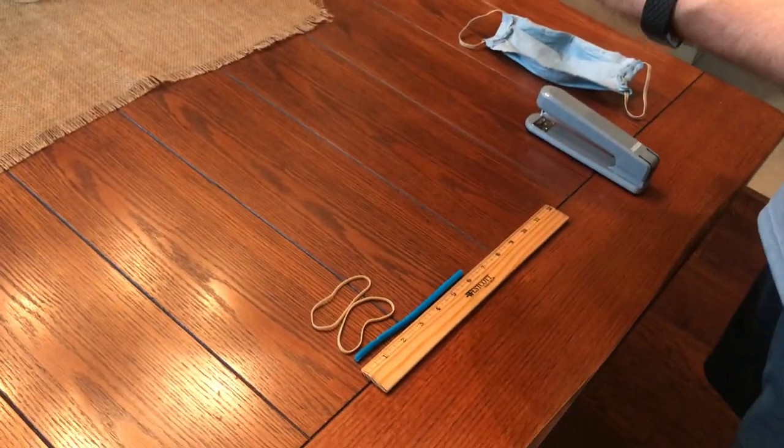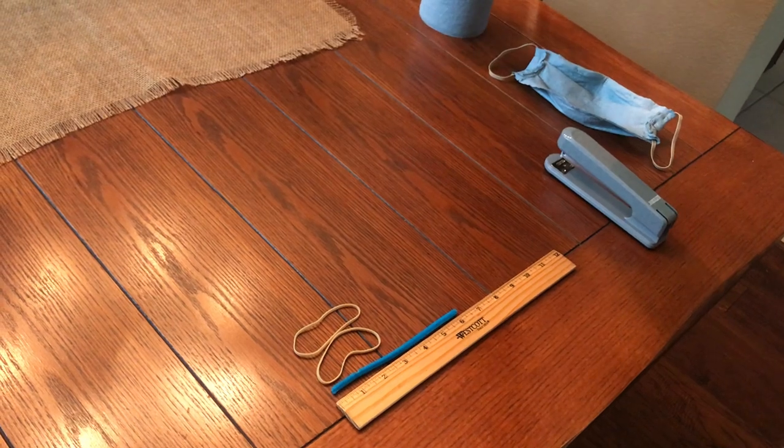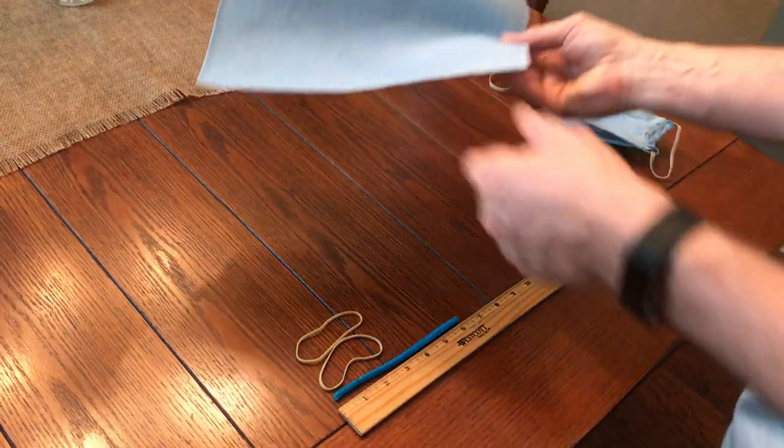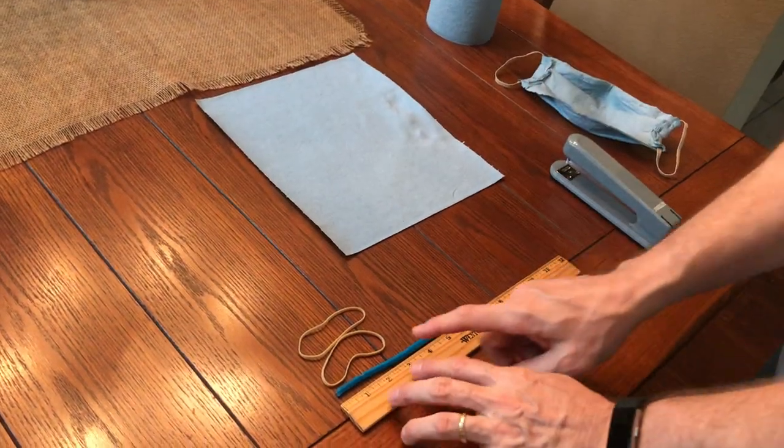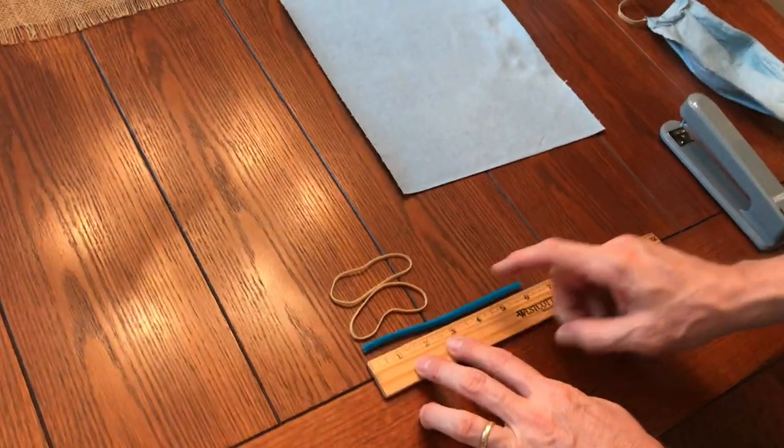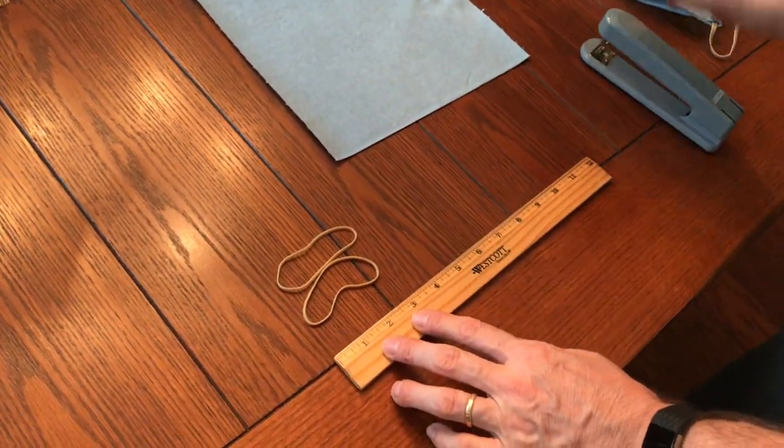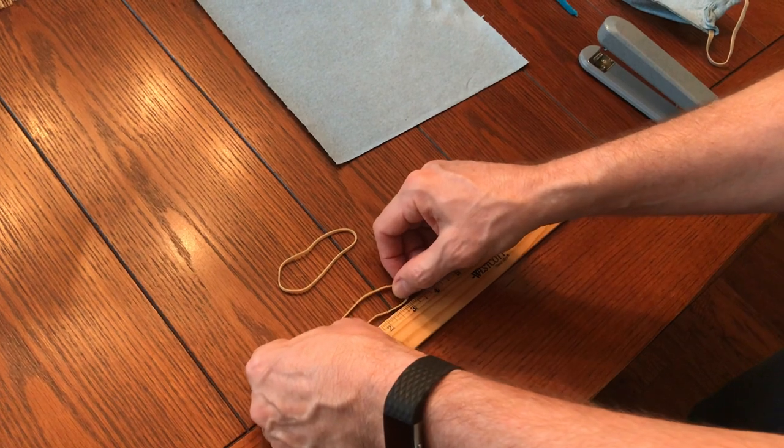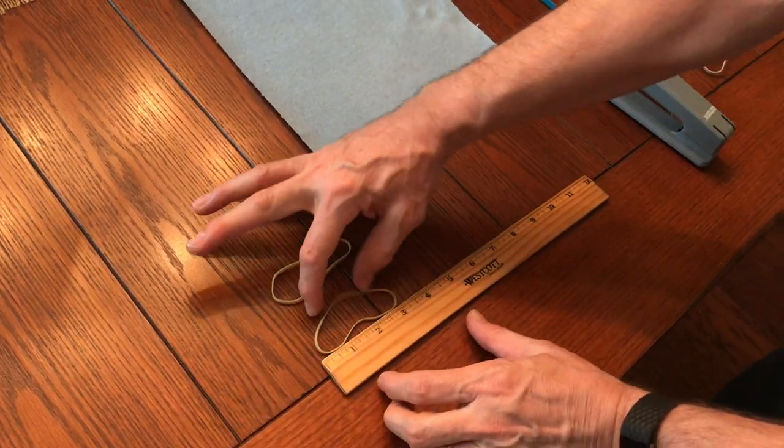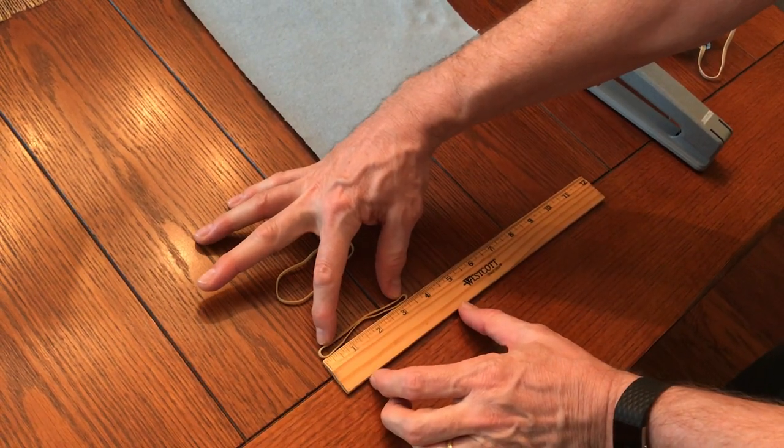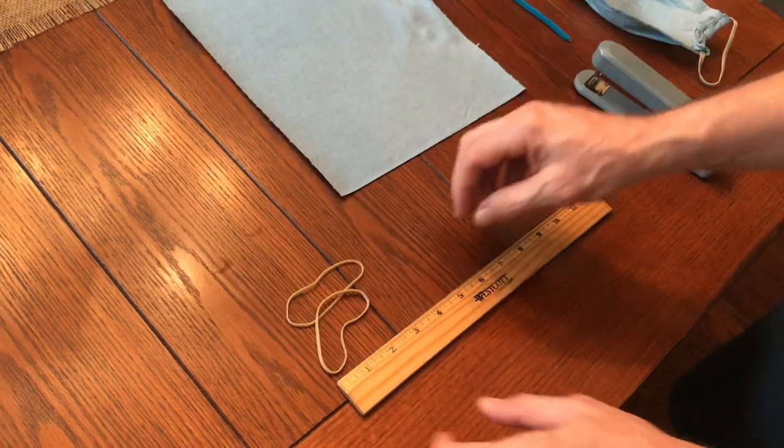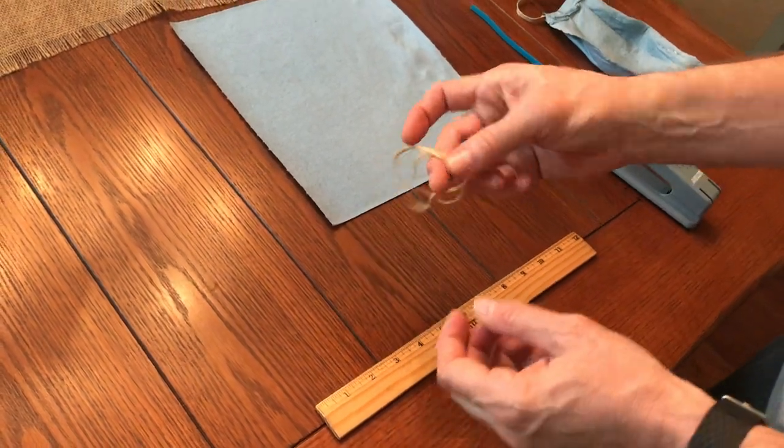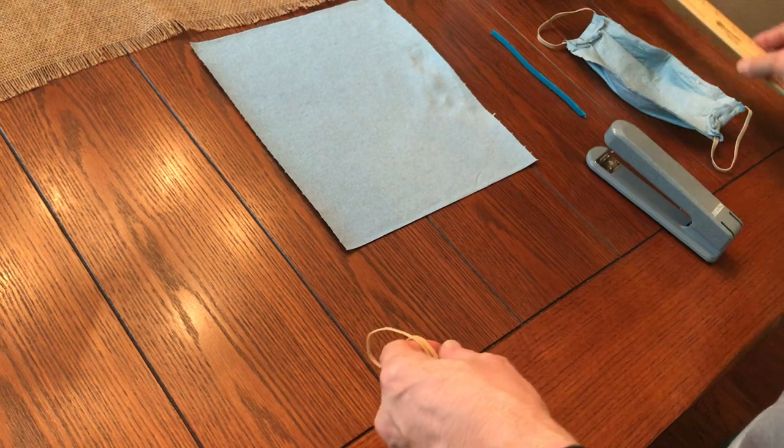So start with the blue shop towel. Take one sheet, that's all you need. Then you want to make sure you have a six inch pipe cleaner if you're going to do that part, and then two three and a half inch rubber bands. I like the eighth inch or the quarter inch size.